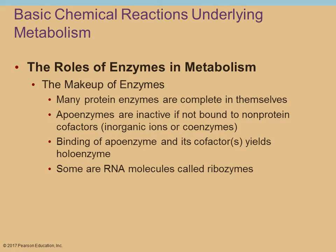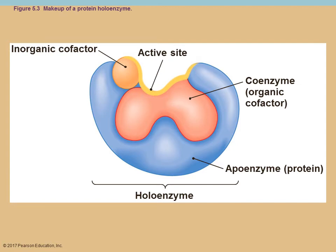Enzymes are a type of protein. Sometimes that protein by itself is a complete, effective, functional enzyme. But sometimes they need to have cofactors to assist them to make it functional. An apoenzyme is just the protein portion that may not be functional on its own.